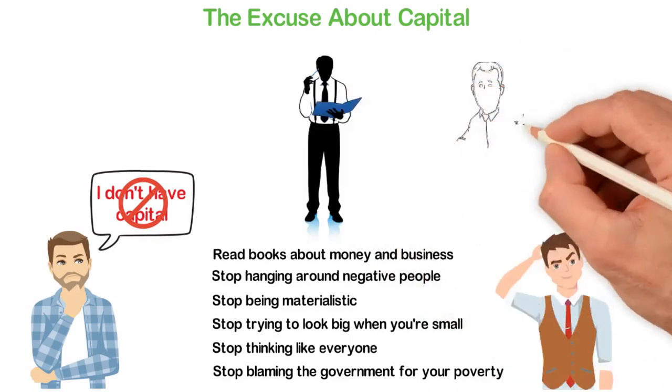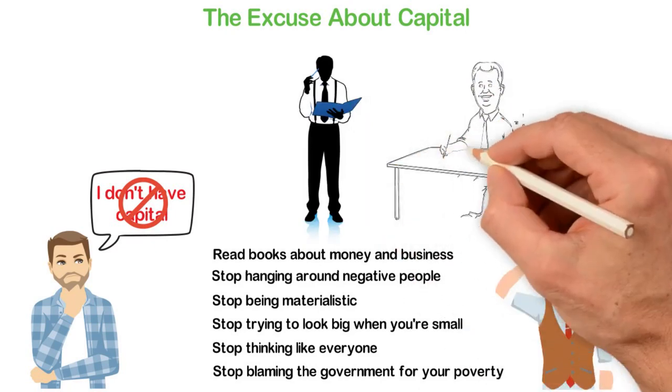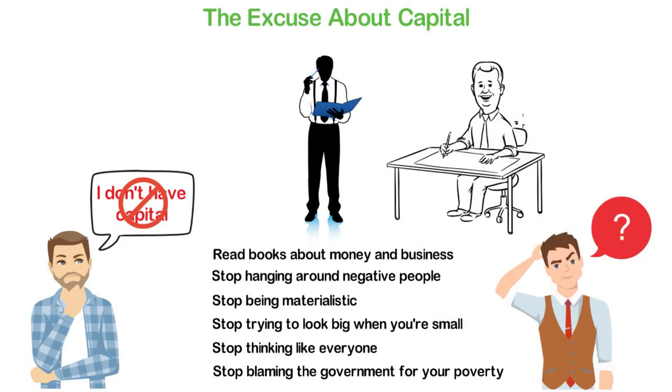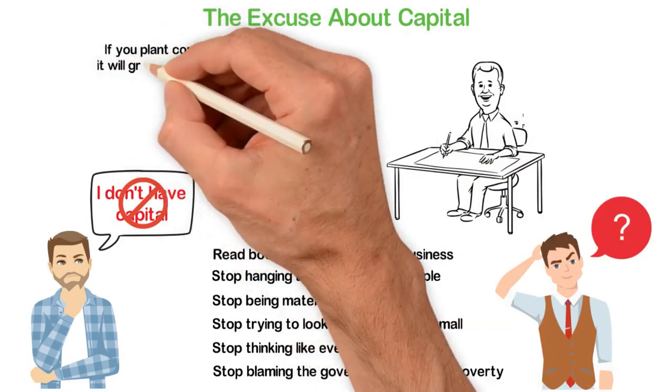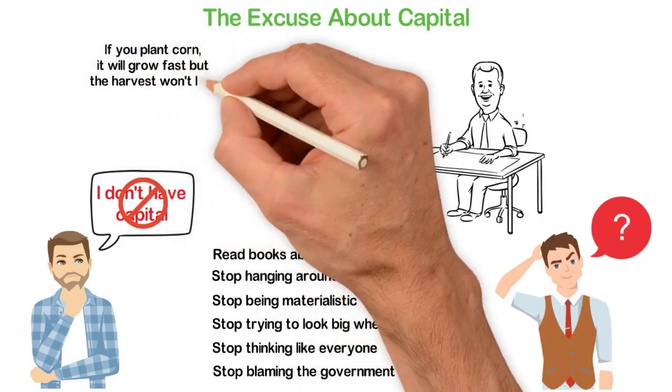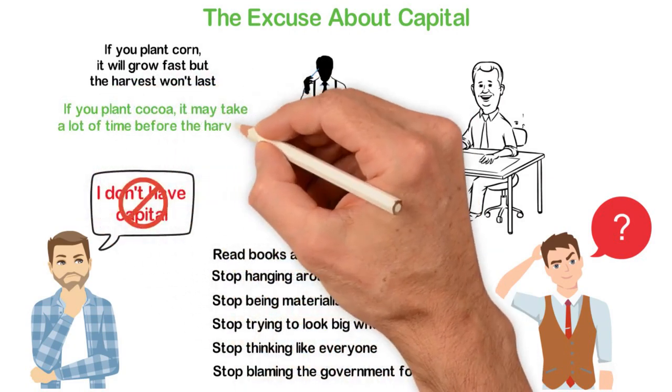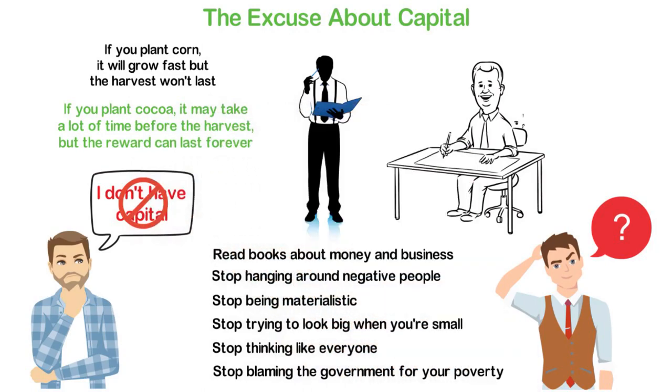I'll conclude this video here so that it won't be too long. If you want me to speak further on this topic, kindly let me know in the comment. If you plant corn, it will grow fast but the harvest won't last. If you plant cocoa, it may take a long time before the harvest but the reward can last forever.